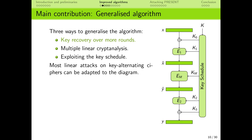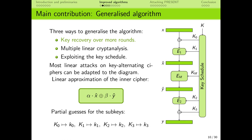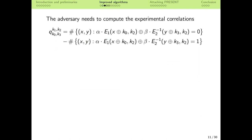We consider a cipher where the plaintext is XORed with the first round subkey and then goes through a small keyed outer cipher corresponding to the first few rounds. After this, the main inner part of the cipher is applied. At the output, another small outer cipher corresponding to the last rounds is applied, and the last round subkey is added to obtain the ciphertext. Many ciphers, and especially key-alternating ciphers, adapt to this structure. Like with the previous attacks, we consider a linear approximation of the inner cipher, and some parts of the subkeys which need to be guessed: k0 and k3 for the external round subkeys, and k1 and k2 for the outer ciphers. The adversary wants to compute the correlation of the linear approximation for all possible guesses of the subkeys.